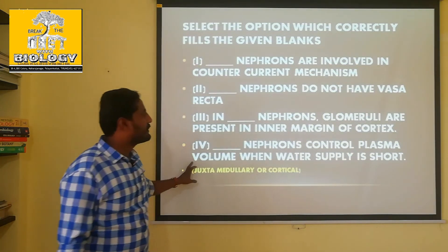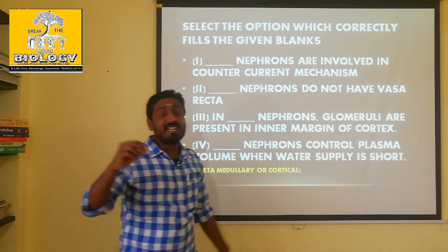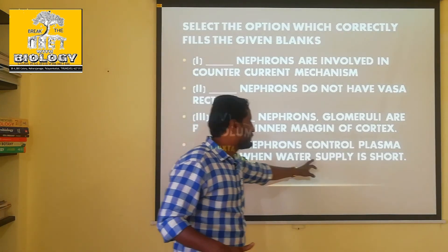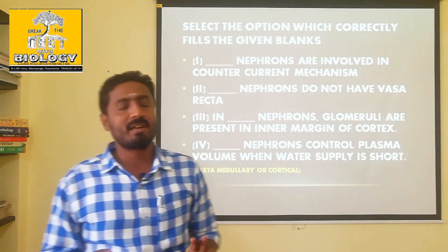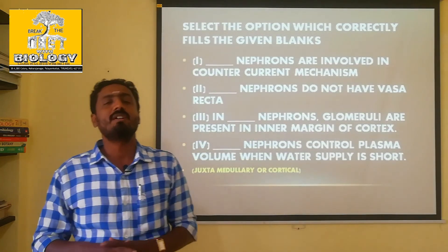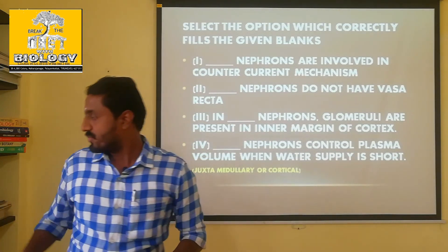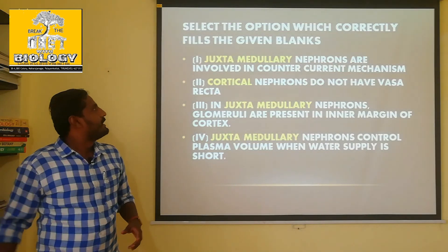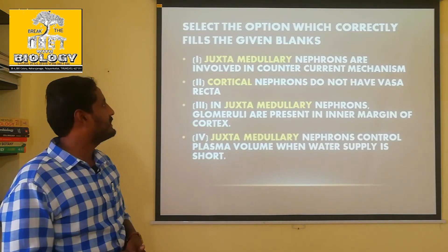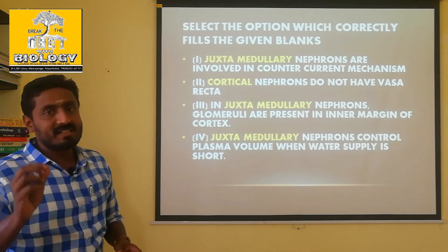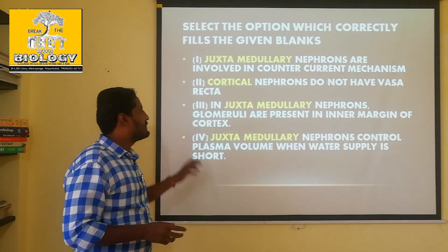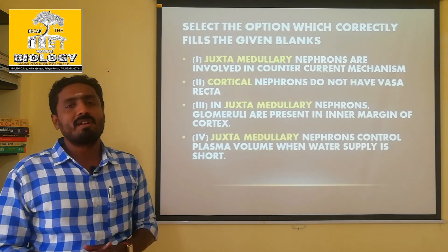Fourth blank: dash nephrons control plasma volume when water supply is short. This refers to dehydration — when the water level is low, water supply is short. The juxtamedullary nephrons perform the counter-current mechanism to compensate for dehydration. So all four answers point to juxtamedullary nephrons, with cortical nephrons lacking Vasa recta and having glomeruli at the outer margin.